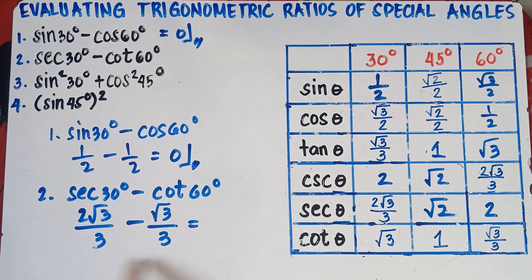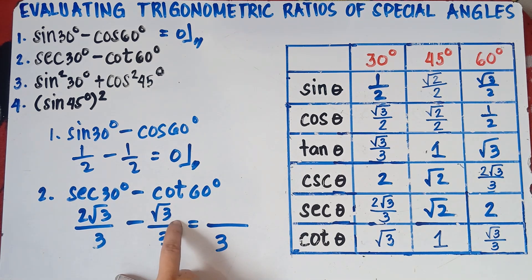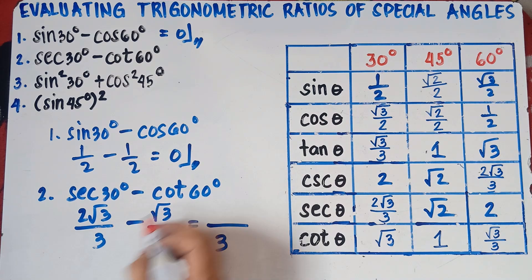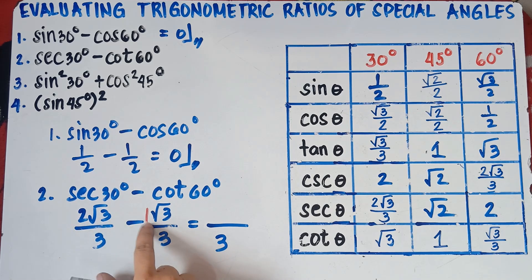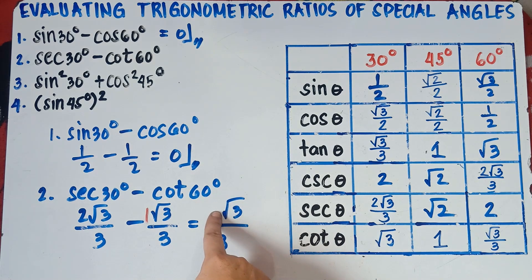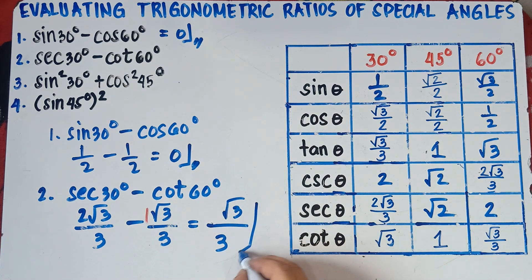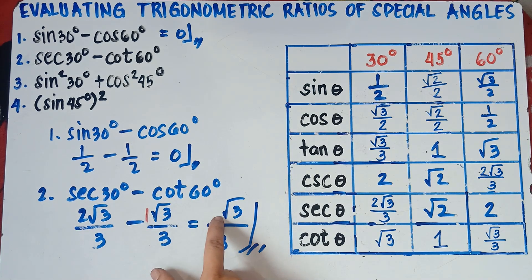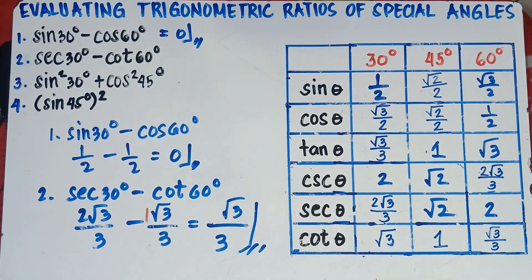Since they have the same denominator of 3, we subtract the radicals in the numerator. If they have the same radicals, copy the radicals and subtract the numbers outside. There is an understood 1 in front of √3, so 2 minus 1 is 1. The answer is √3 over 3.